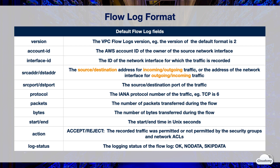AWS account ID is the account ID of the owner of the source network interface for which traffic is recorded. If the network interface is created by an AWS service — for example when creating a VPC endpoint or network load balancer — the record may display unknown for this field. Interface ID is the ID of the network interface for which the traffic is recorded. Source address is the source address for incoming traffic or the IP address of the network interface for outgoing traffic. Destination address is the destination address for outgoing traffic or the IP address of the network interface for incoming traffic.